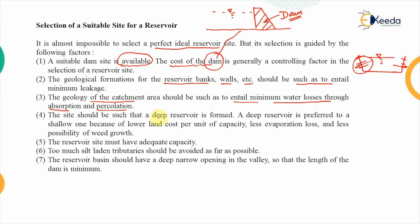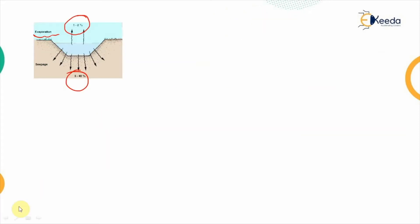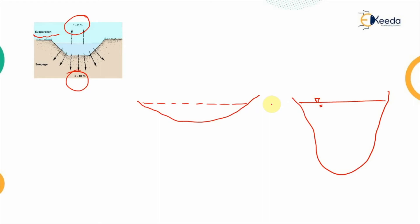The site should be such that a deep reservoir is formed. A deep reservoir is preferred over a shallow one because of the lower land cost per unit of capacity, less evaporation losses, and less possibility of weed growth. Comparing two reservoirs with the same volume, the shallow one requires more area whereas the deep one requires less catchment area.